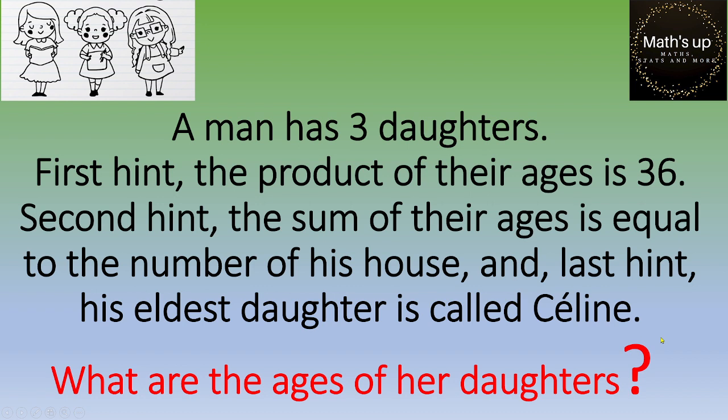The final question is to find out the ages of her daughters. You've got three hints. The first one is the product of their ages is 36. Second hint, the sum is equal to the number of his house. And the last one is his eldest daughter is called Céline.